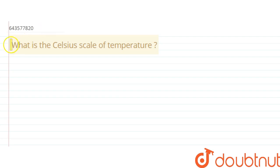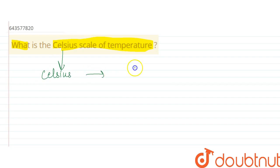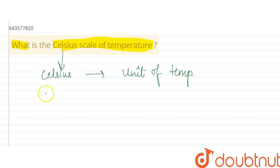The question says: what is the Celsius scale of temperature? Celsius is a unit of temperature in which the temperature is measured, and zero degree Celsius is considered to be the freezing point of water.